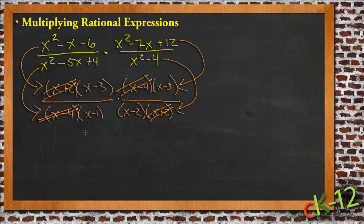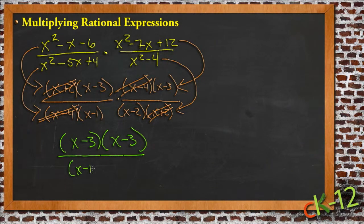So then on the top, let me change colors for another step here. On the top, we have x minus 3 times x minus 3. That's all that's left up there. And then on the bottom, we have x minus 1 times x minus 2. And that's it.